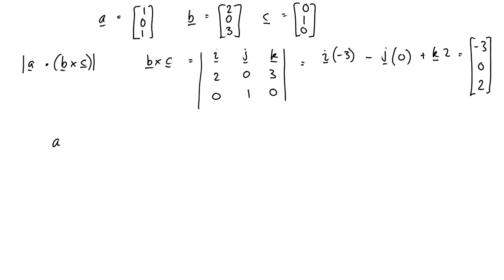So then we just figure out A dot B cross C is equal to 1, 0, 1 dot negative 3, 0, 2. Is equal to negative 3 plus 2 equals negative 1. See, as I said before, it's possible that this triple product, which is called a scalar triple product, could come out to be negative.